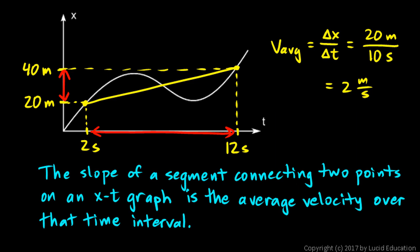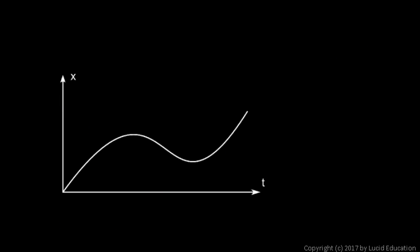The slope of a segment connecting two points on an x-t graph is the average velocity over that time interval. You should understand that fact, not just memorize it — connect any two points on an x-t graph and you get a line segment whose slope is the average velocity over the corresponding time interval.